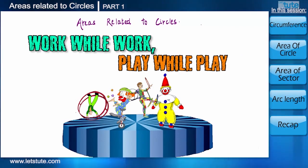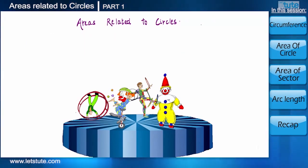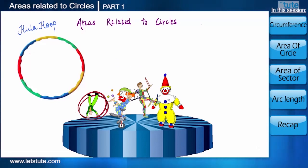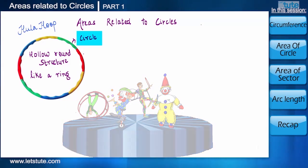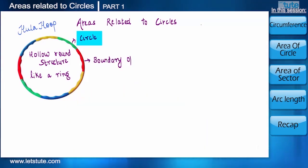So which was the act that you liked the most? One of the things that amazed me the most was the hula hoop. We all know that hula hoop is a hollow round structure like a ring or in mathematics we can call it as a circle. And in our previous session we learnt that boundary of any circle is known as circumference.